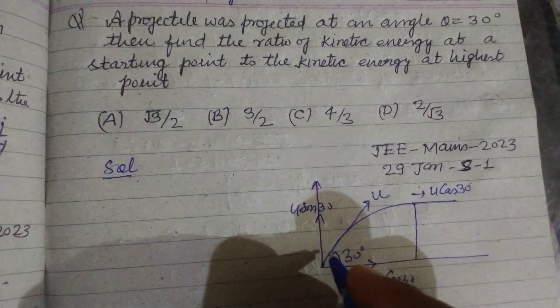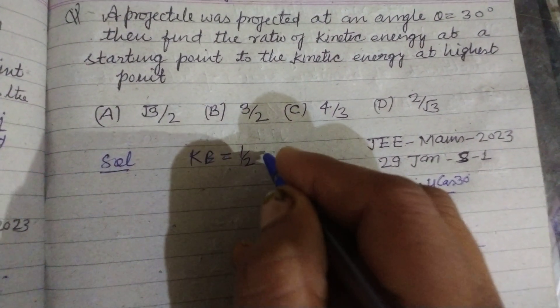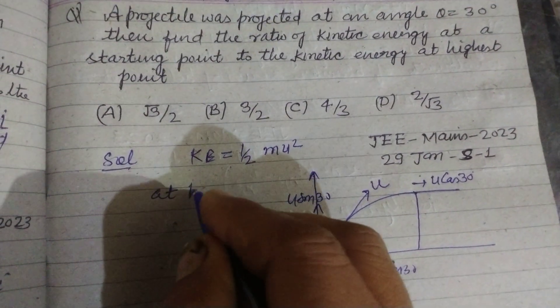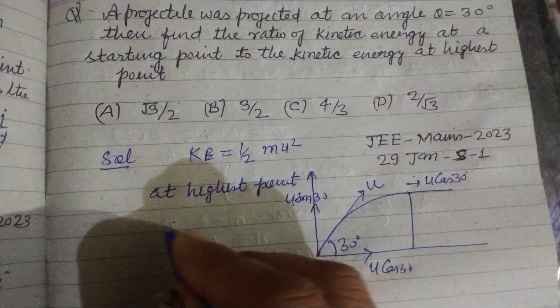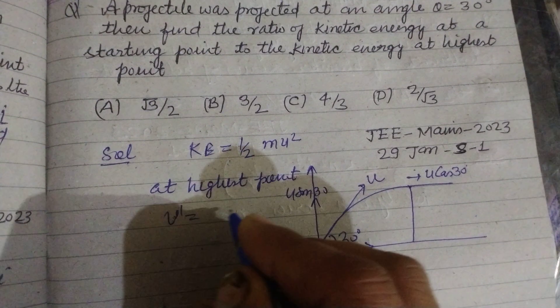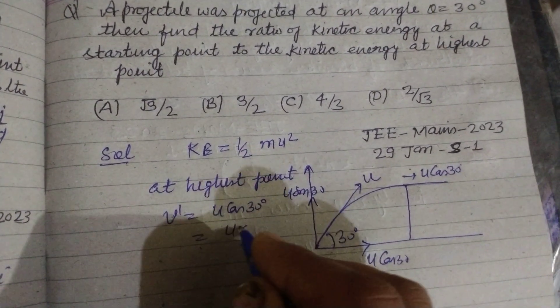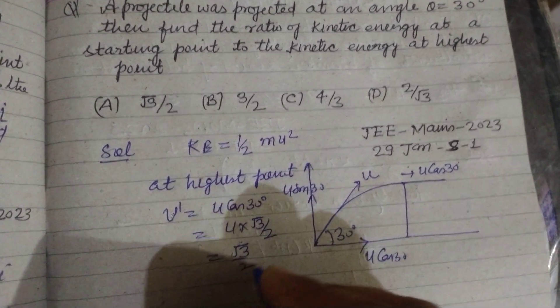So kinetic energy at starting point is half m U squared. At highest point, velocity V equals U cos 30, and cos 30 is root 3 by 2, so root 3 by 2 U.